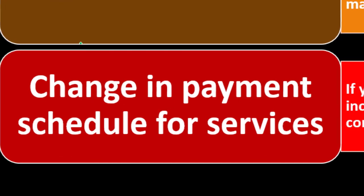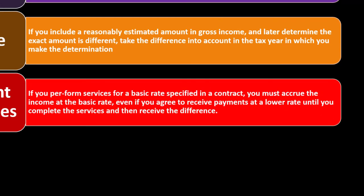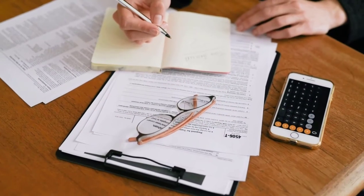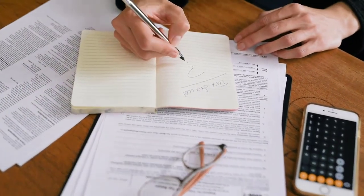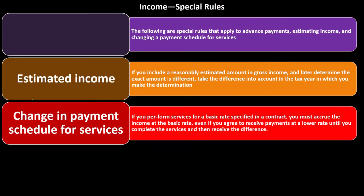Change in payment schedule for services: if you perform services for a basic rate specified in a contract, you must accrue the income at the basic rate, even if you agree to receive payments at a lower rate until you complete the services and then receive the difference. You can imagine a situation where you're recording income at a basic rate and then have a balloon payment at the end, which can distort the payments. But you should be recording the revenue as you earn it — the amount you expect to receive as you earn it is what you should record as income.